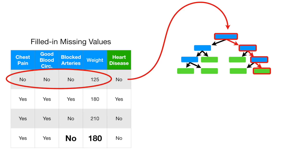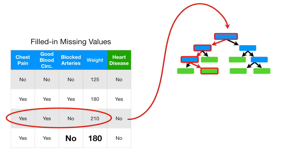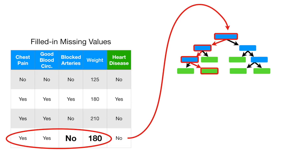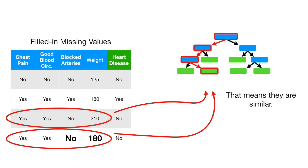Notice that sample three and sample four both ended up at the same leaf node. That means they're similar, at least that's how similarity is defined in random forests.